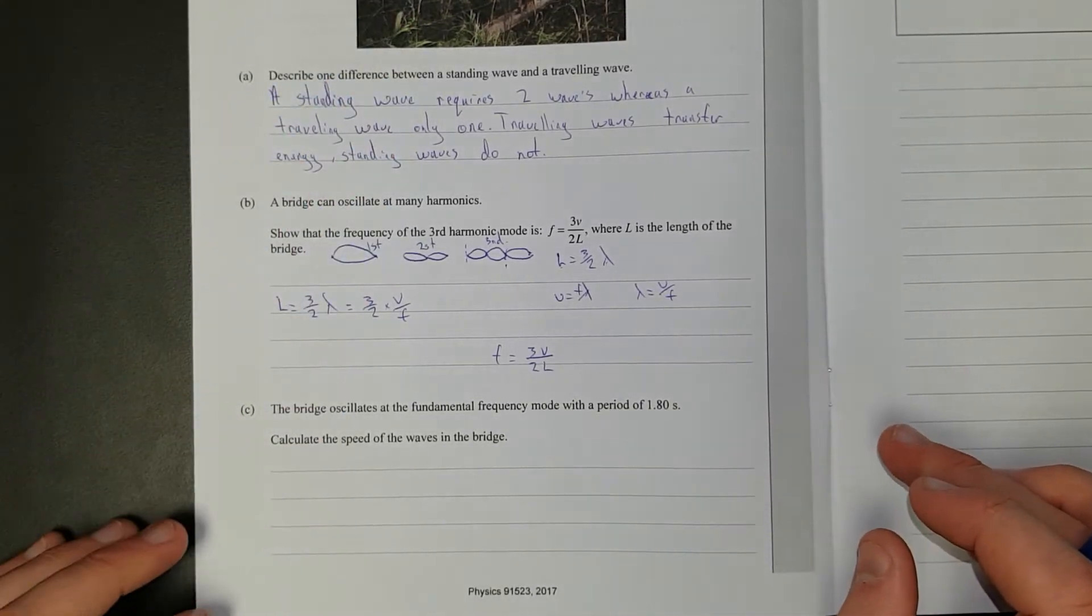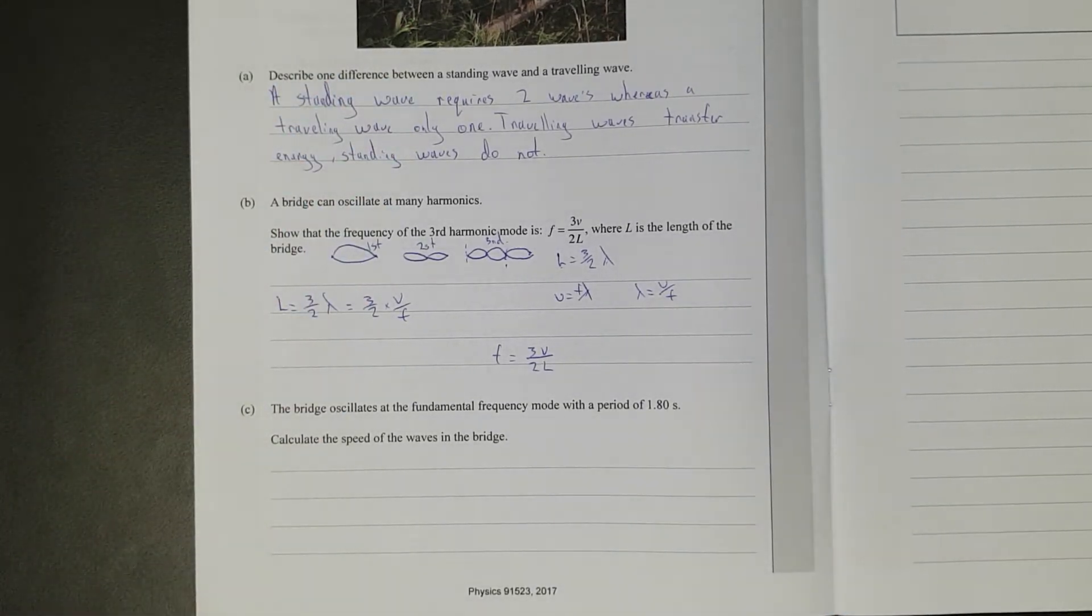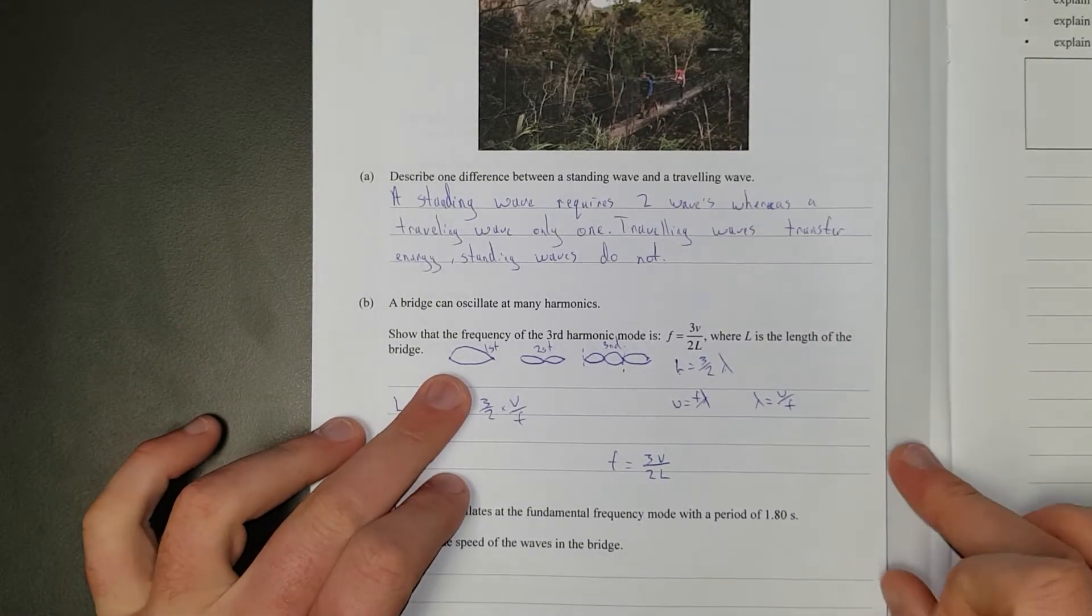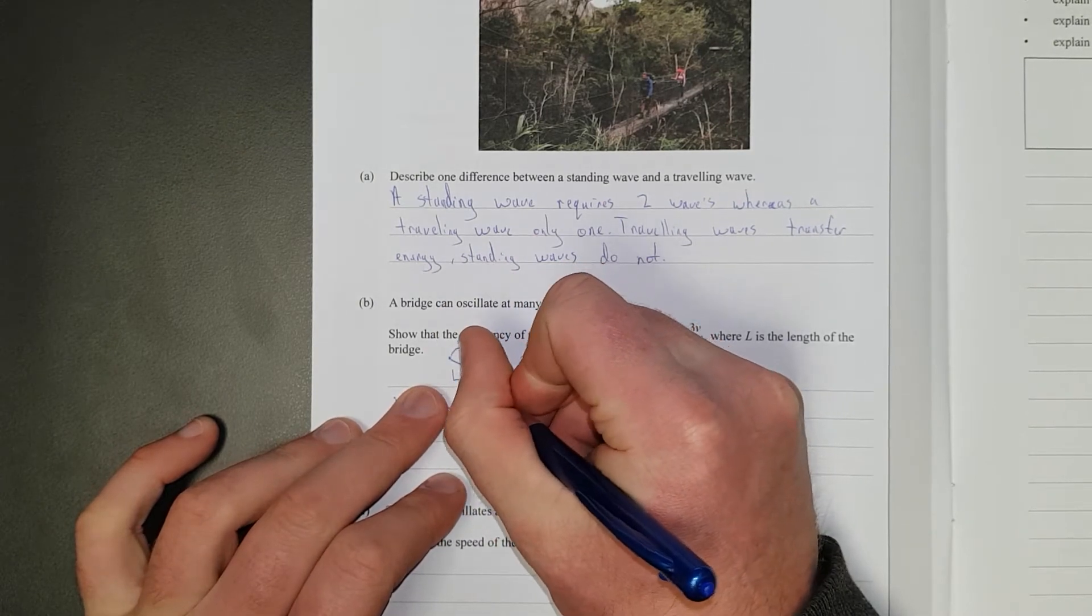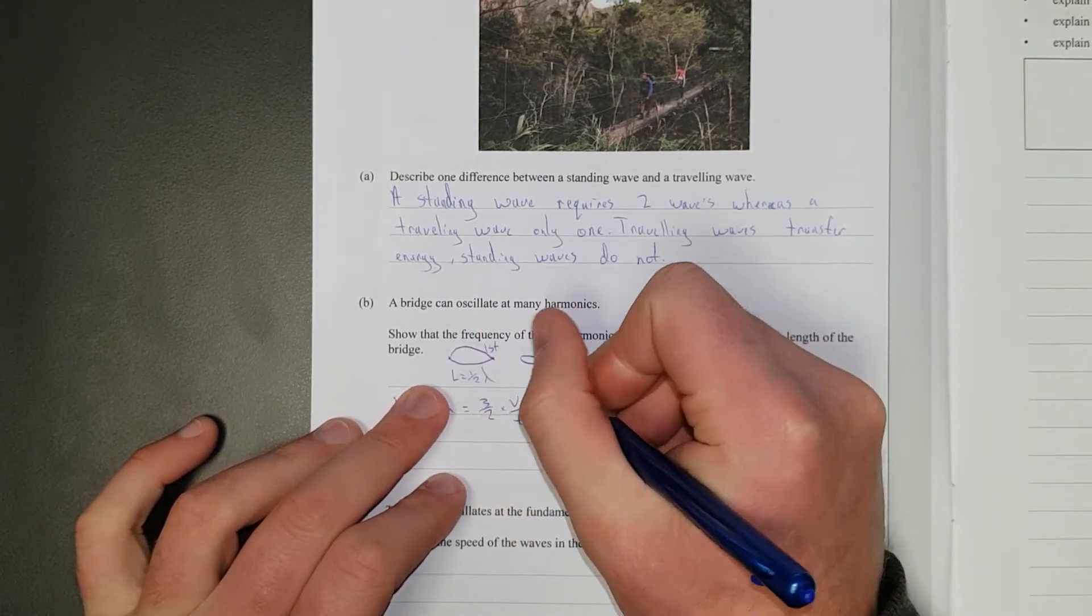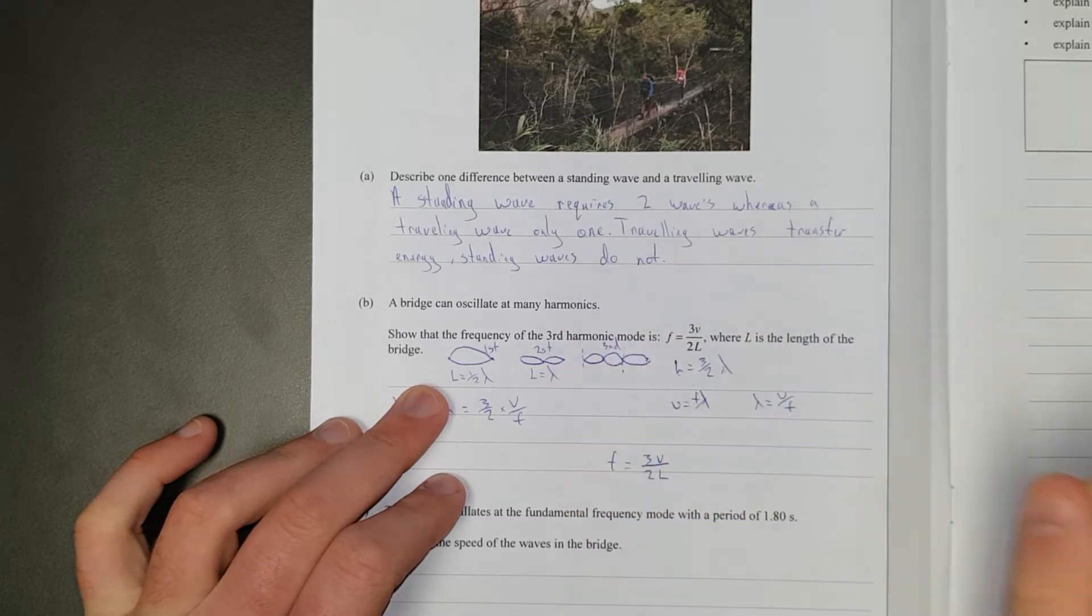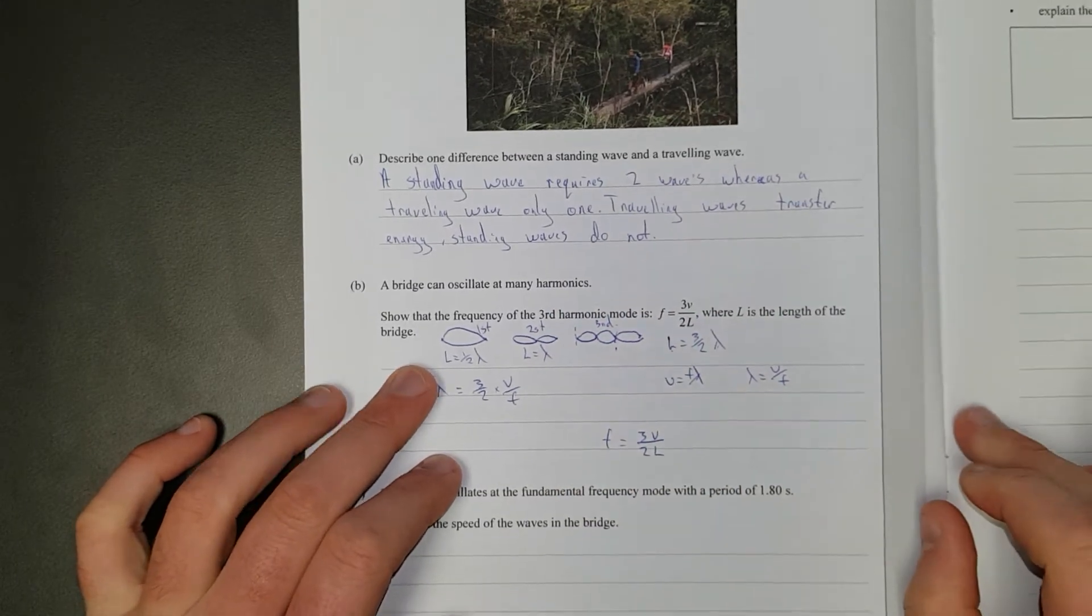The bridge oscillates at a fundamental mode with a period of 1.8 seconds. Calculate the speed of the waves in the bridge. I'll just quickly write out what all the rest of the harmonics are as well. The first is L equals half lambda and L equals lambda. It's probably going to make this a little bit easier for later on.